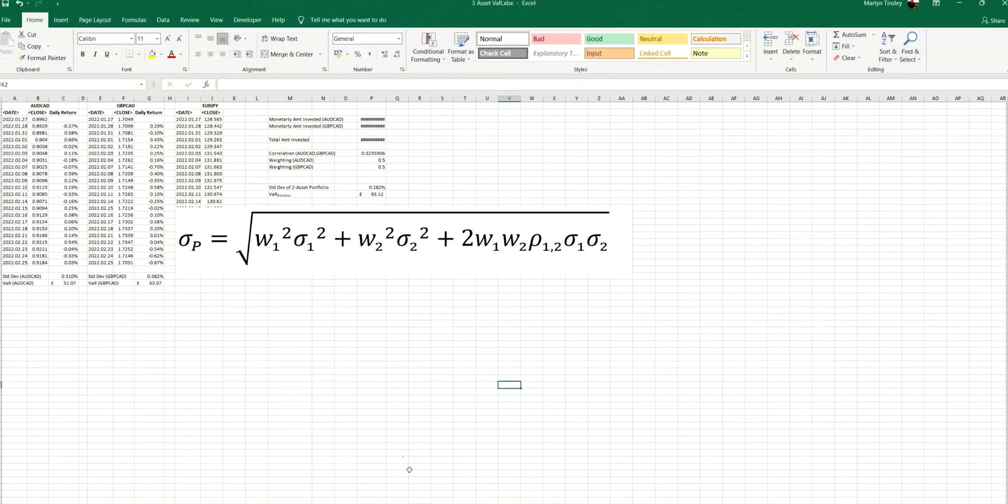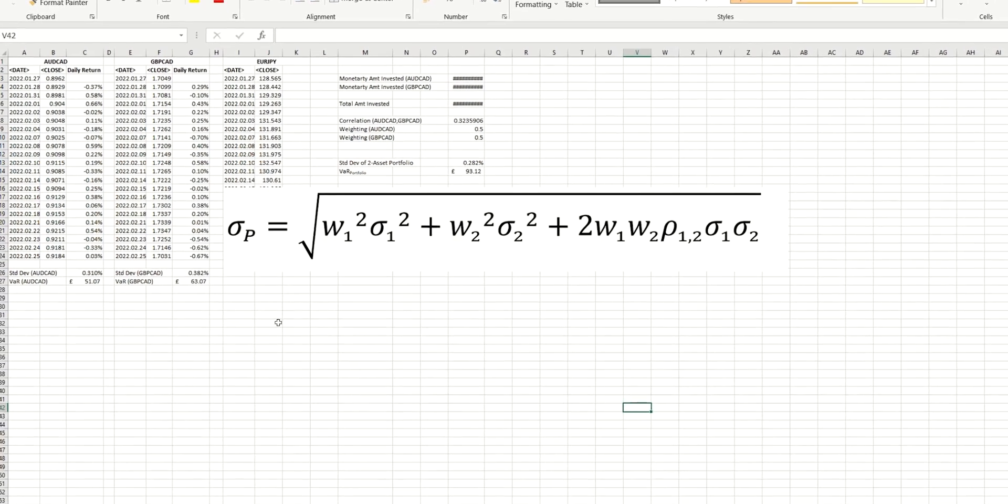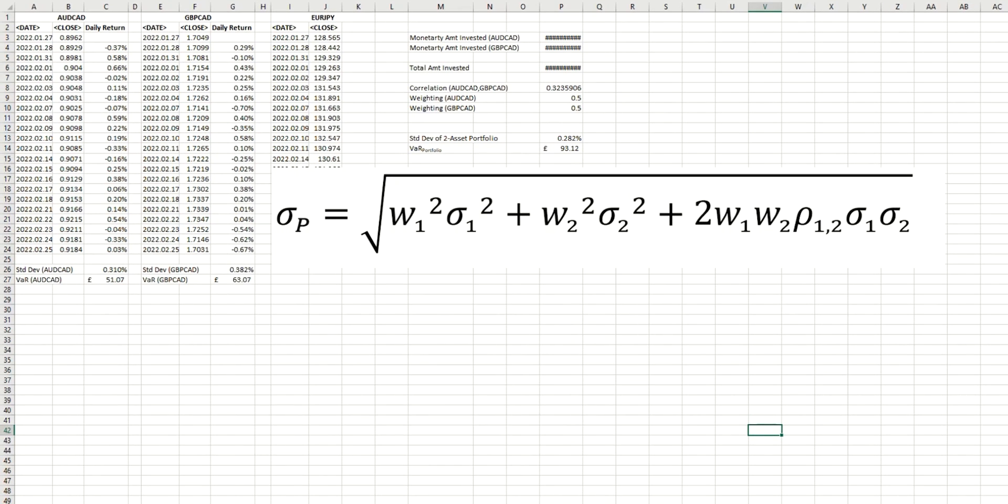In the episode that follows this, I'll code this in MQL5 for any number of positions. Let's make a start. So I'm going to start off where I left last time when we did this for just two positions. And if you remember, we did it for Aussie CAD and Pound CAD.